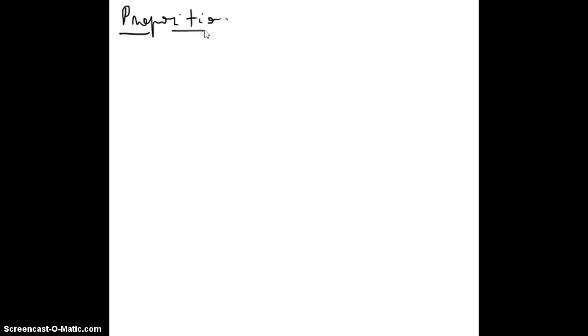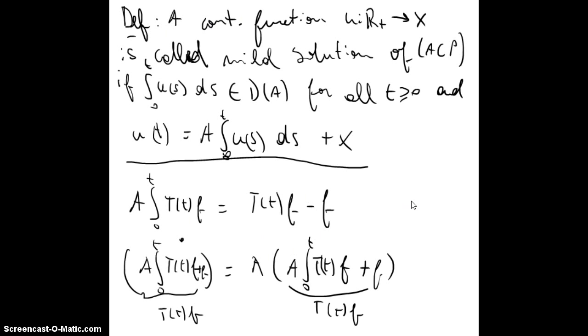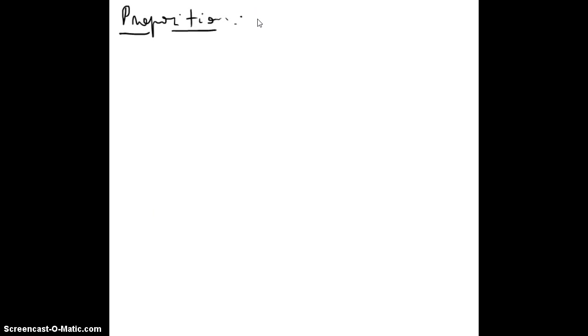In this case, f is in X. So f will be in X, but A of the integral T(t)f, the integral, will have to be in the domain of A because here we are applying A to do the integral, and f will just have to be in X. We are asking a little less. The new proposition will be: let A, D(A) be the generator of a C0 semigroup T(t).